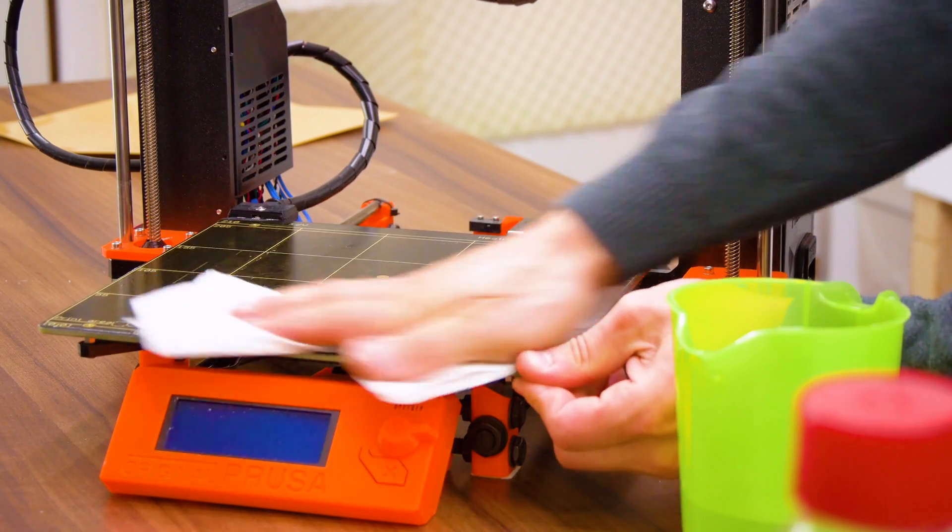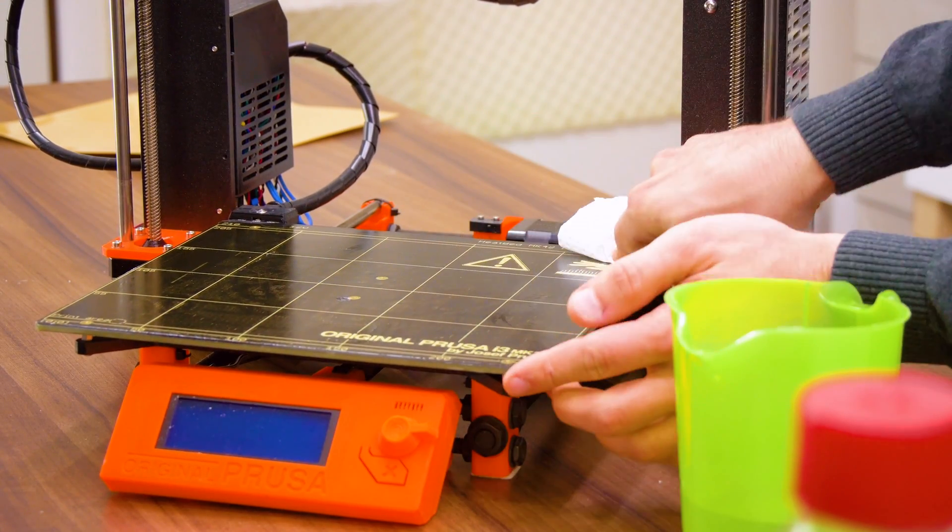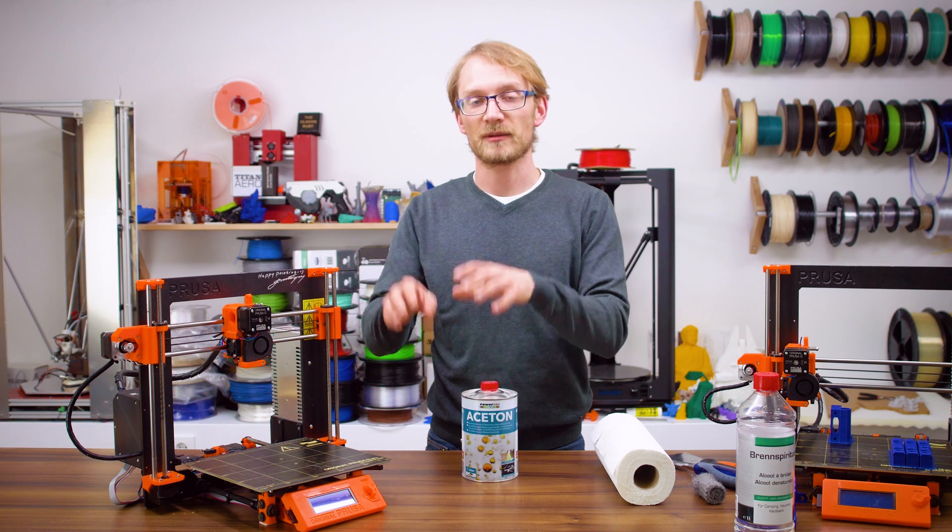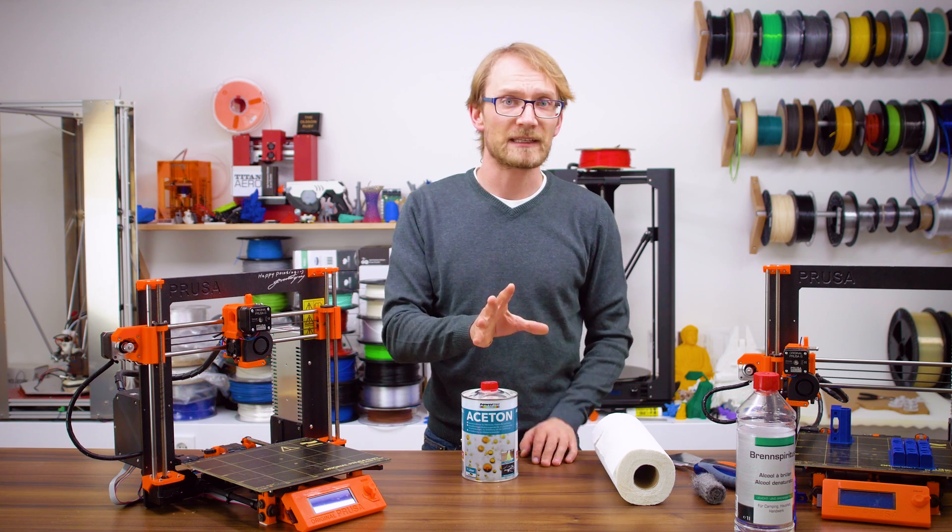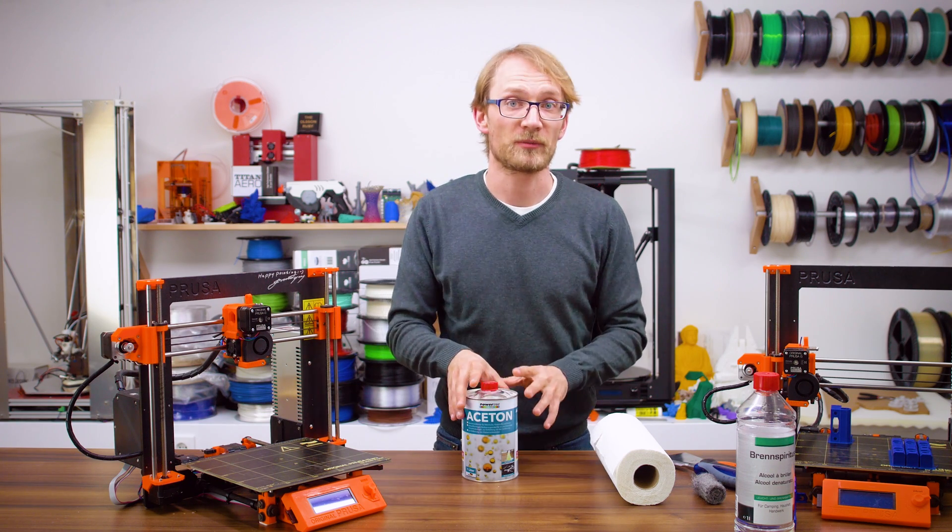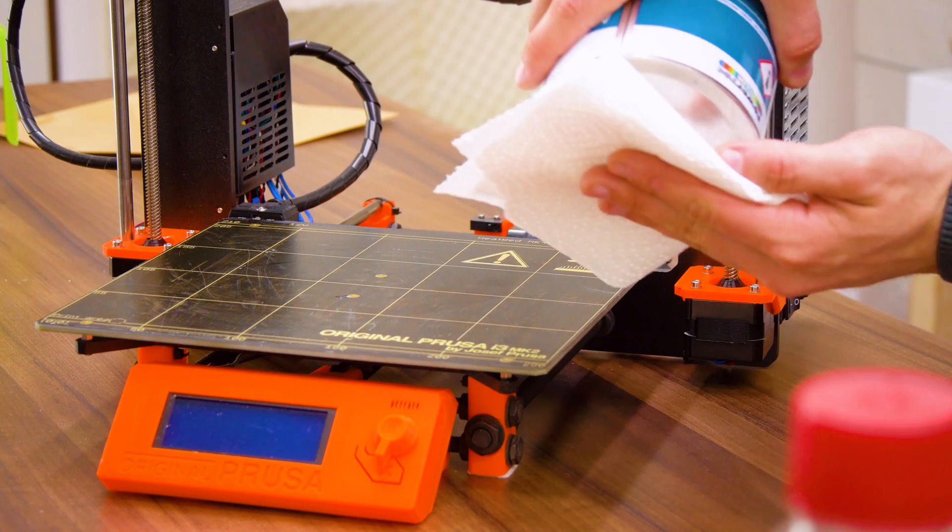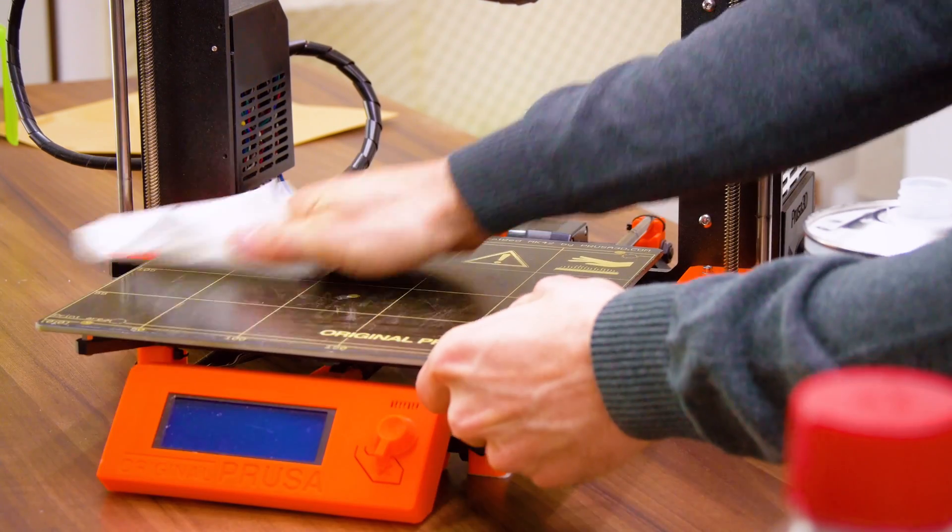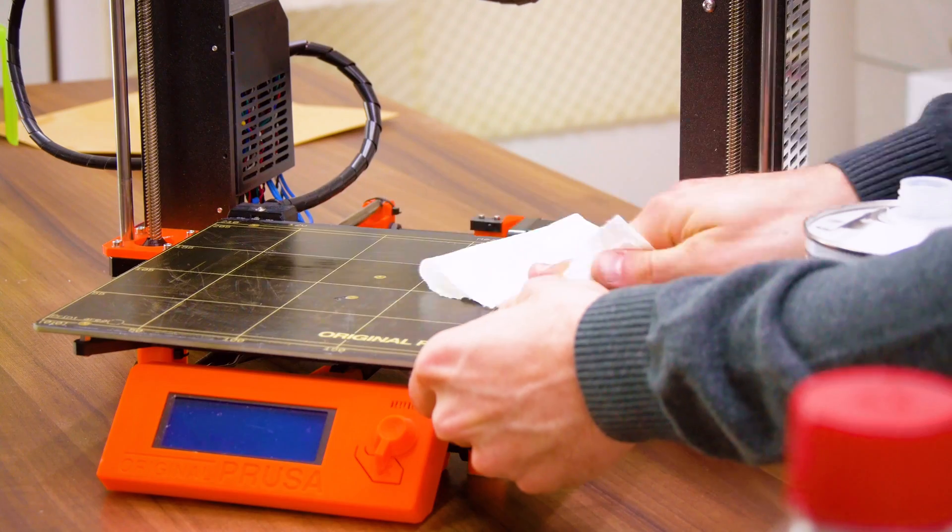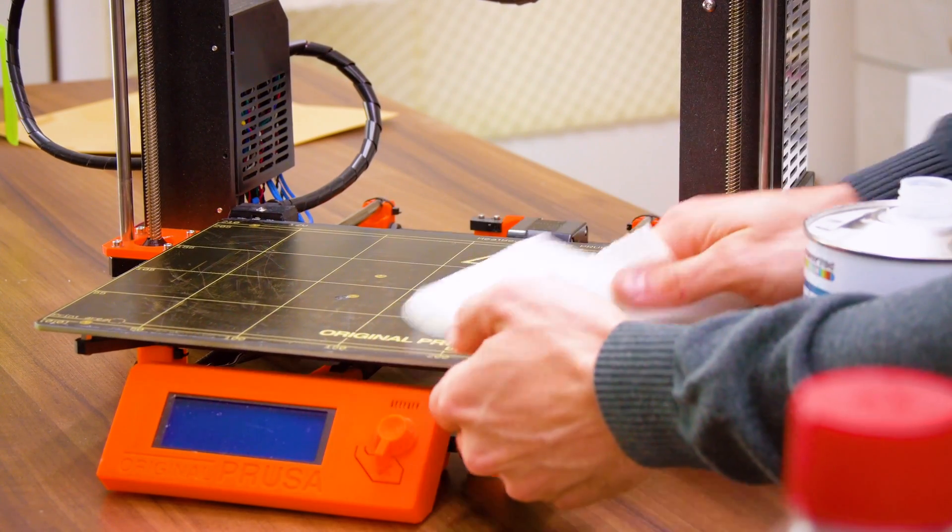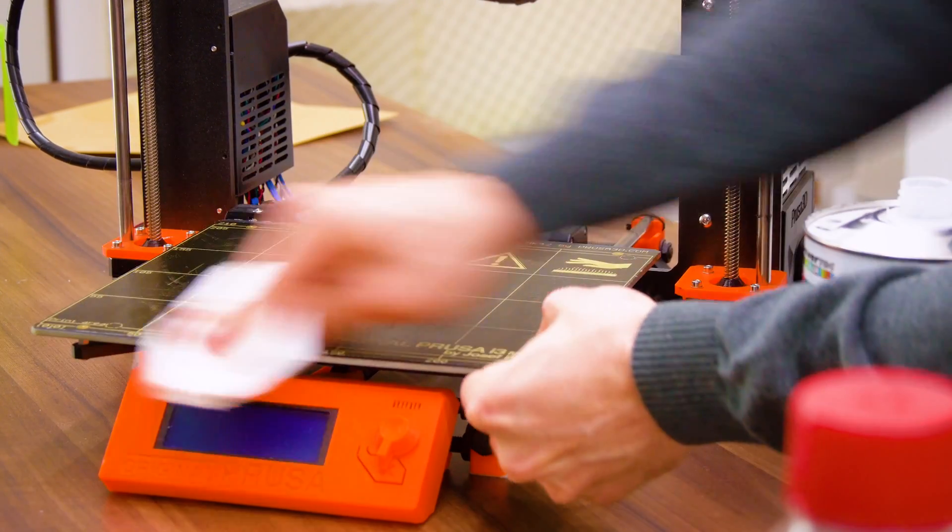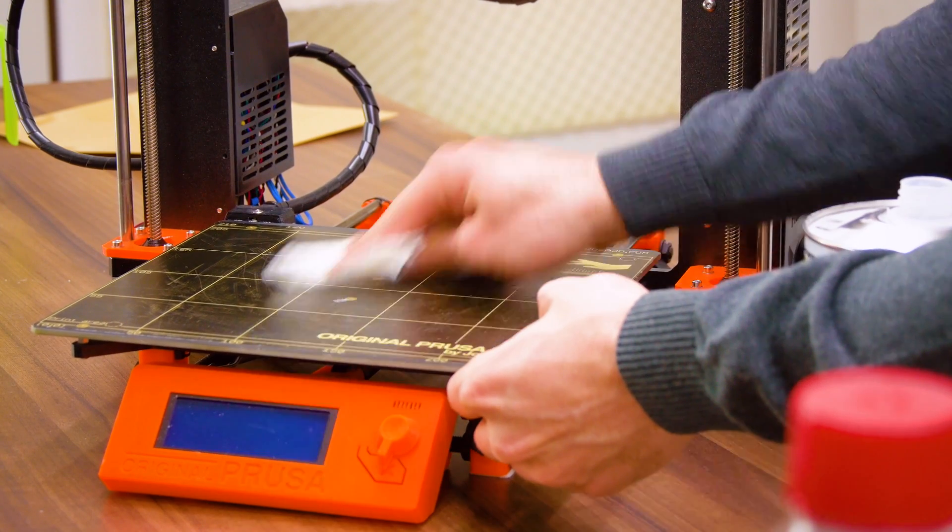Next up, acetone. This will dissolve most polymer-based coatings and take off any grease that might still be on there. Technically, you should be wearing the proper gloves, by the way. PEI and Kapton are typically not dissolved by acetone, so you're not damaging the bed surface here. Again, take a few passes until there's nothing coming off the PEI surface anymore.